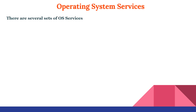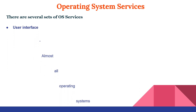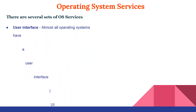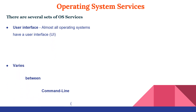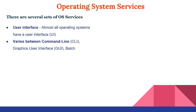Now we'll talk about operating system services. There are several sets of OS services. One set provides functions that are helpful to the user. The first is the user interface — almost all operating systems have a user interface, which varies between command line interface (CLI), graphical user interface (GUI), and batch.